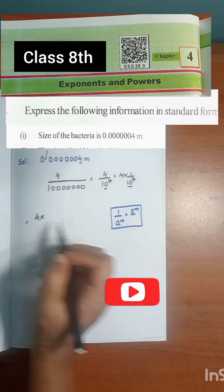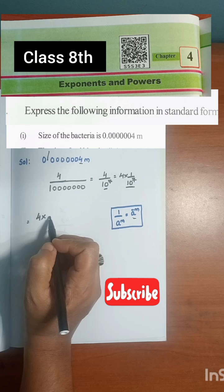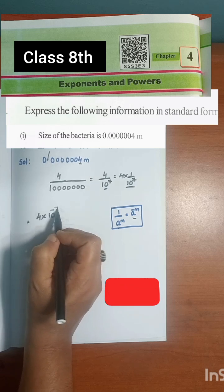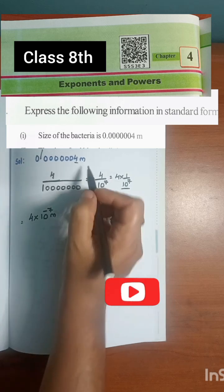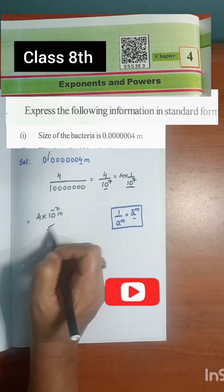So 4 into - the formula is here - 10 to the power of minus 7. The units are meters, so this is the answer.